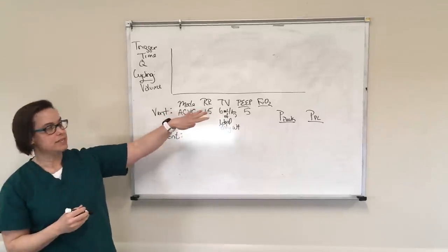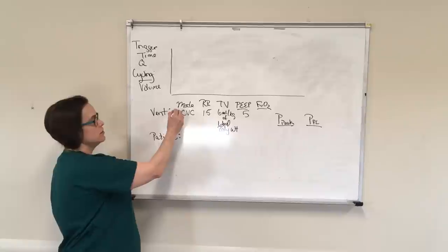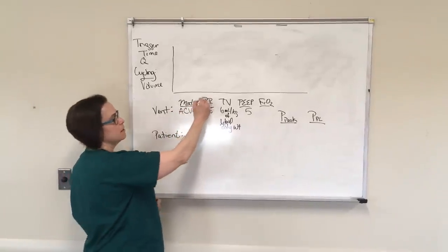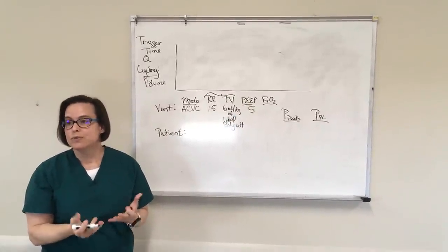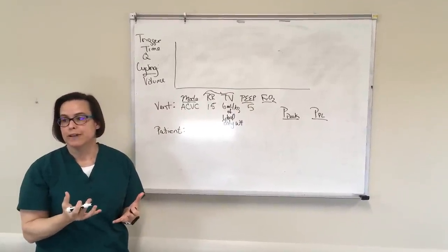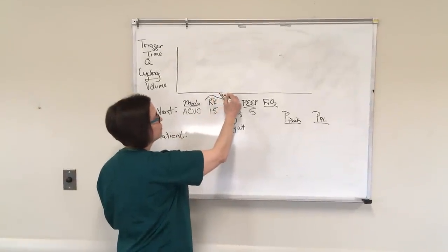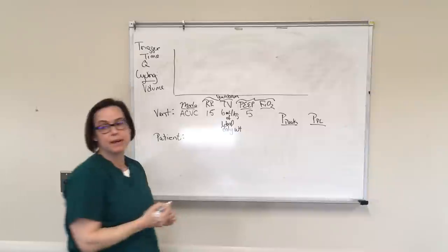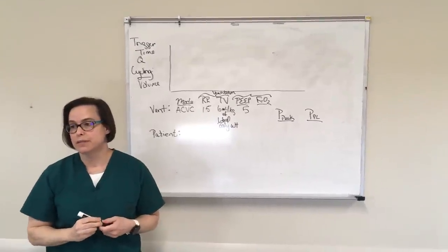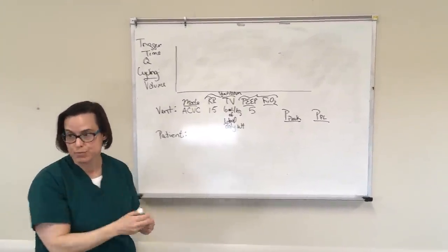The reason that I put these in this order as you're looking at them is the mode is always going to be a first thing, but the respiratory rate and the tidal volume are the two things that we can manipulate to affect how well a patient is ventilating. And then the PEEP and the FIO2 are the two things that we can affect to change how well a patient is oxygenating on this particular mode.